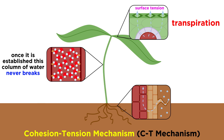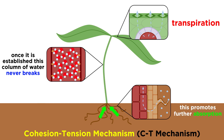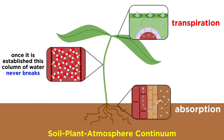So the mechanism of transpiration and the resulting surface tension at the stomatal openings pulls water molecules upwards to replace those lost by evaporation. This force is transferred through the plant's water columns down to its roots, where it causes more water to be pulled in from the soil. This continuous water transportation pathway is known as the soil-plant-atmosphere continuum.